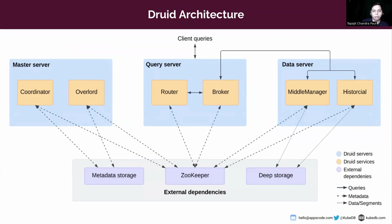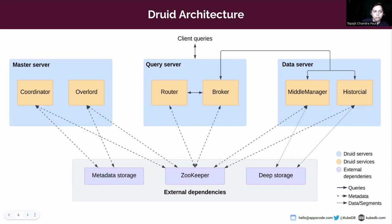As we can see from the diagram, there are several types of services in Druid: coordinator, overlord, router, broker, middle manager, and historical. These services are usually organized in three server types: master, query, and data. Beyond these built-in service types, Druid has three external dependencies: metadata storage, ZooKeeper, and deep storage — meaning you need to ensure these dependencies are available before you provision Druid. The good news is KubeDB has support for ZooKeeper and MySQL or PostgreSQL for metadata storage.